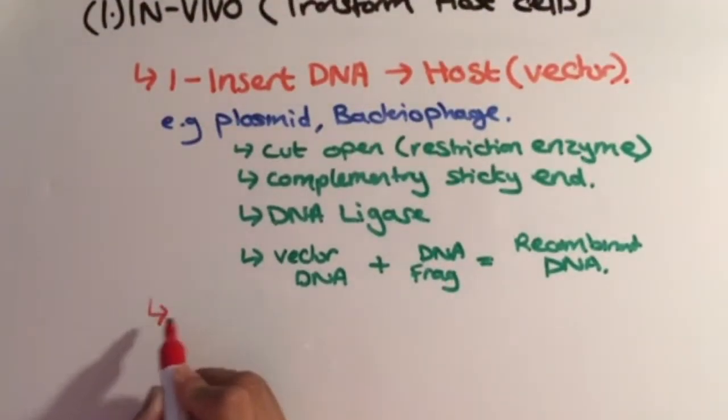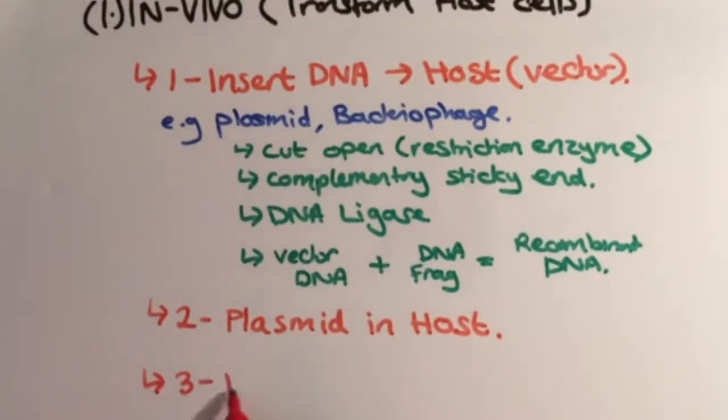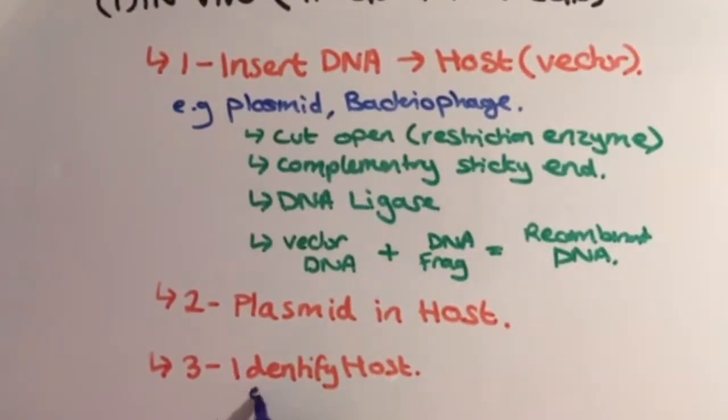The next step involves the vector with the recombinant DNA being transferred into the cells. If plasmid is used, the bacterial cells are placed in ice-cold calcium chloride, then the plasmids are added and heat shocked so that they're taken up.